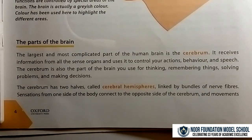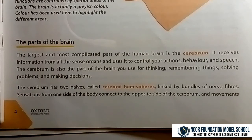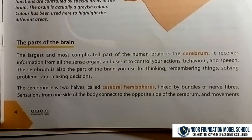Our next topic is the parts of the brain, from Chapter 1: The Nervous System. The largest and most complicated part of the human brain is the cerebrum. It receives information from all the sense organs and uses it to control your actions, behavior, and speech. The cerebrum is also the part of the brain you use for thinking and remembering things.